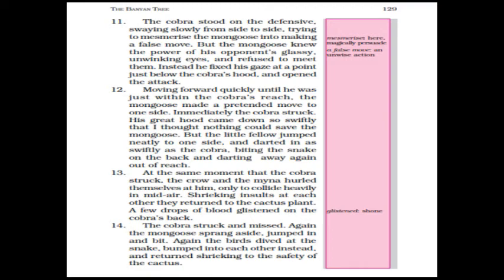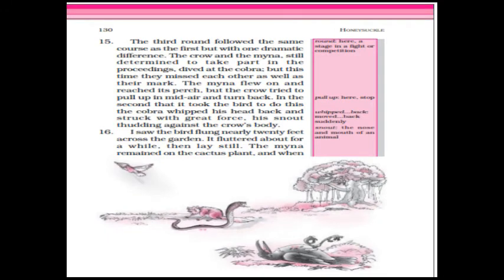The third round followed the same course, but with one dramatic difference. The crow and the myna, still determined to take part, dived at the cobra, but this time they missed each other as well as their mark. The myna flew on and reached its perch, but the crow tried to pull up in mid-air and turn back. In the second that it took the bird to do this, the cobra whipped his head back and struck with great force — his snout thudded against the crow's body.